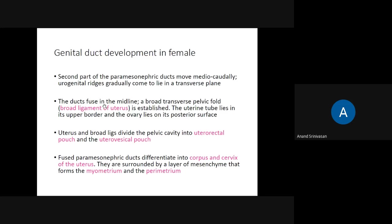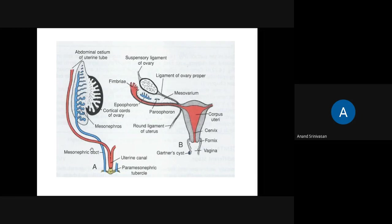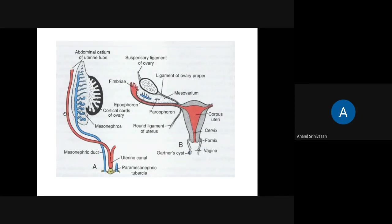As they fuse with one another, a transverse pelvic fold is formed which becomes the broad ligament of the uterus. The ducts are located laterally and then move towards the midline, bringing a sheet of peritoneum along with them — these form the broad ligament. The anterior part between the urinary bladder and the uterus is called the vesico-uterine pouch, and between the uterus and the rectum is the recto-uterine pouch.